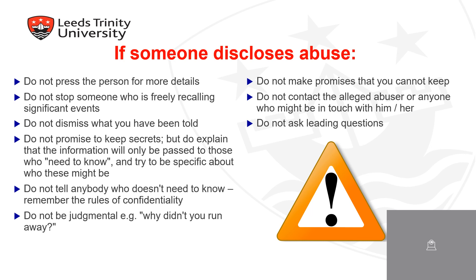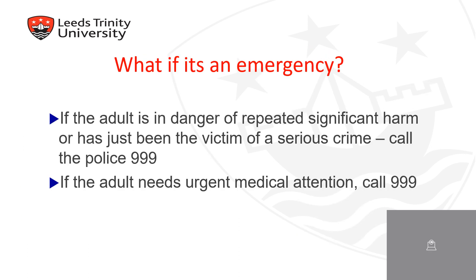Moving on to if someone discloses abuse to you — it is important that you must be patient with the individual and allow them to speak freely. As a healthcare professional, you must ensure that you are not opinionated or judgmental towards them, while also ensuring that you are not making promises such as promising that you will not tell anybody about what they have disclosed. It is always best to be honest. However, if an individual is in danger, it is important that you directly call the police and report this.